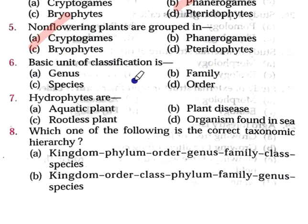Question number 6: The basic unit of classification is — Option A: Genus, Option B: Family, Option C: Species, Option D: Order. When we do classification, we start from the broad level: first we define its kingdom — whether it is in the animal kingdom or the plant kingdom — then phylum or division, then class, then order, then family, then genus, then species. So the basic unit of classification is Species. Option C is correct.